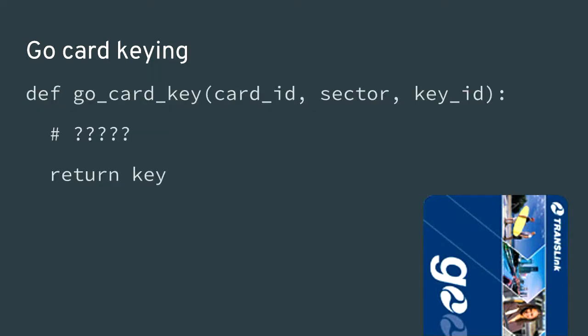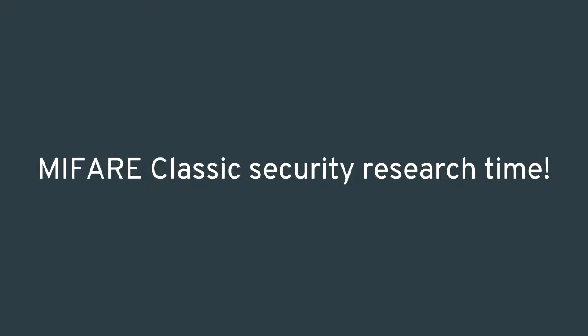But I still had a problem: the card is locked with per-card and per-sector keys and absolutely nothing is readable without them. The readers contain a key diversification function that takes a card ID, sector number, and key ID, does something with it, and returns a 48-bit key. I live about 850 kilometers from the nearest Go card agent or value-add machine, and I'd really like to read my Go card without having to register and hand over personal information to TransLink.